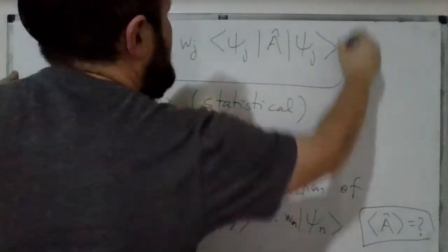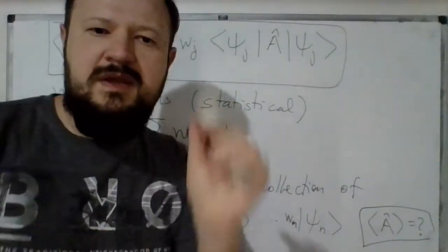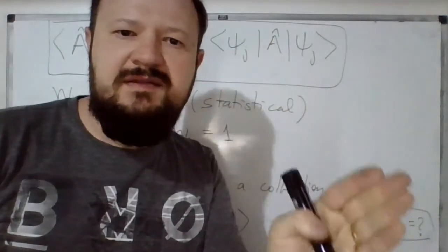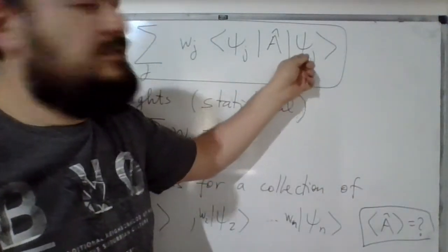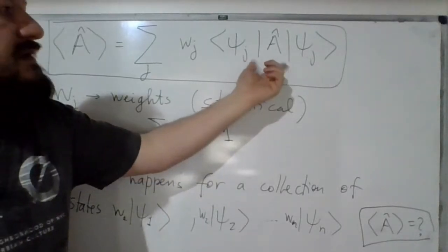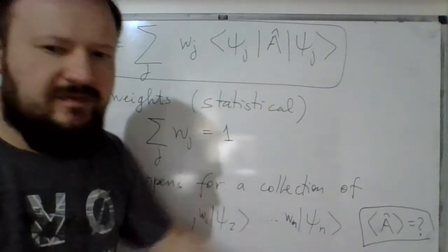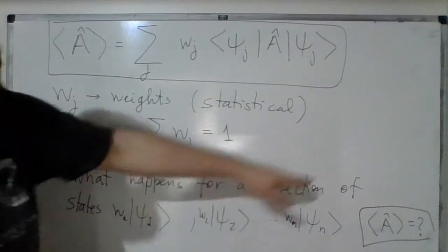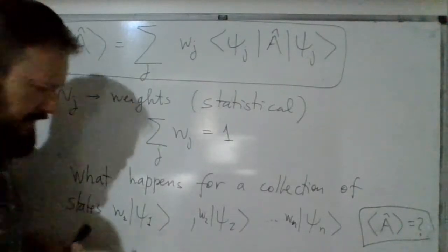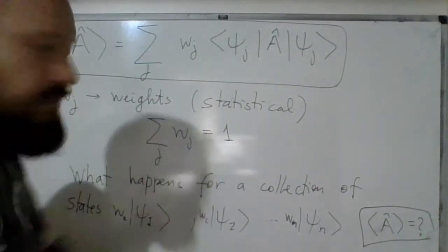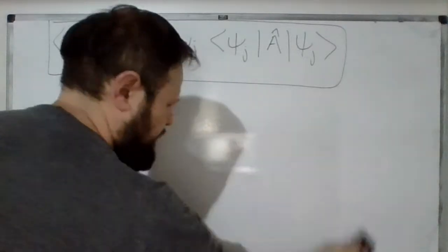The average of your operator is calculated when you have your system in a collection of states psi_j — a mixed ensemble. You can calculate the average given each pure state, and now you have a collection of pure states forming a mixed ensemble. Let us rewrite this equation in the following form as a definition.